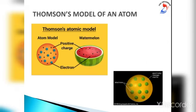Thomson's model of an atom is shown in the figure. The coloured area in the sphere contains all the positive charge in the atom, and the negatively charged electrons are spread throughout this positive charge. The total negative charge of the electrons is equal to the total positive charge of the sphere. These equal and opposite charges balance each other, making the atom electrically neutral on the whole. Thomson's model explained the electrically neutral nature of atoms, but it could not explain the results of various experiments carried out by other scientists.